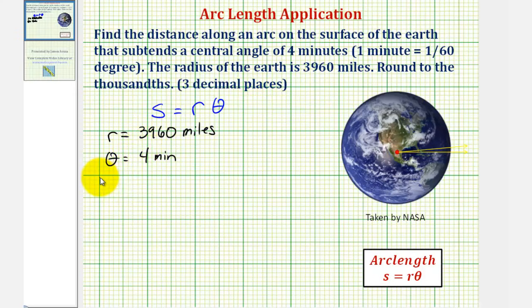Let's first convert to degrees, since one minute equals one-sixtieth of a degree. So four minutes would be equal to four times one-sixtieth of a degree. Notice if we write four over one, this will simplify. There's one four in four, and fifteen fours in sixty. So our angle theta is equal to one-fifteenth of a degree.